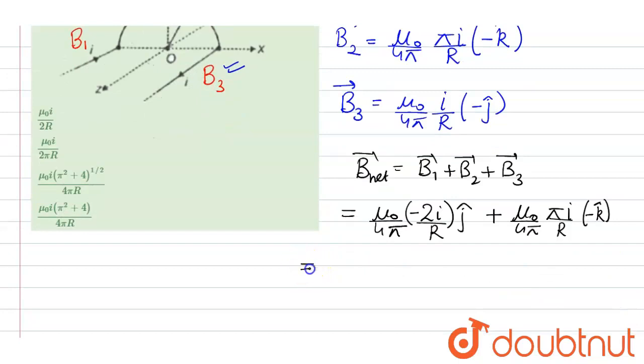Now taking common that is mu naught upon 4 pi i by r, it will be minus 2j minus pi k.